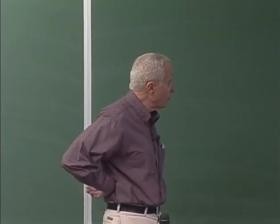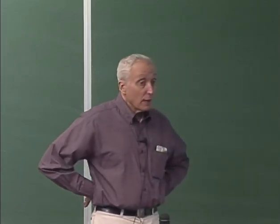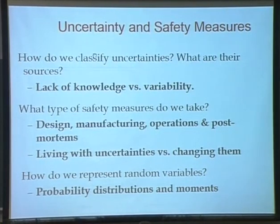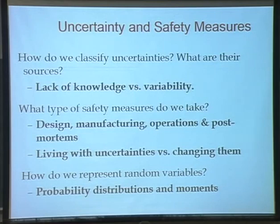The topic of today is a brief introduction on two things that are common to engineering design: number one, there is uncertainty — we don't know things exactly — and number two, to counter that, we take some safety measures. Most engineers don't think about the first part.